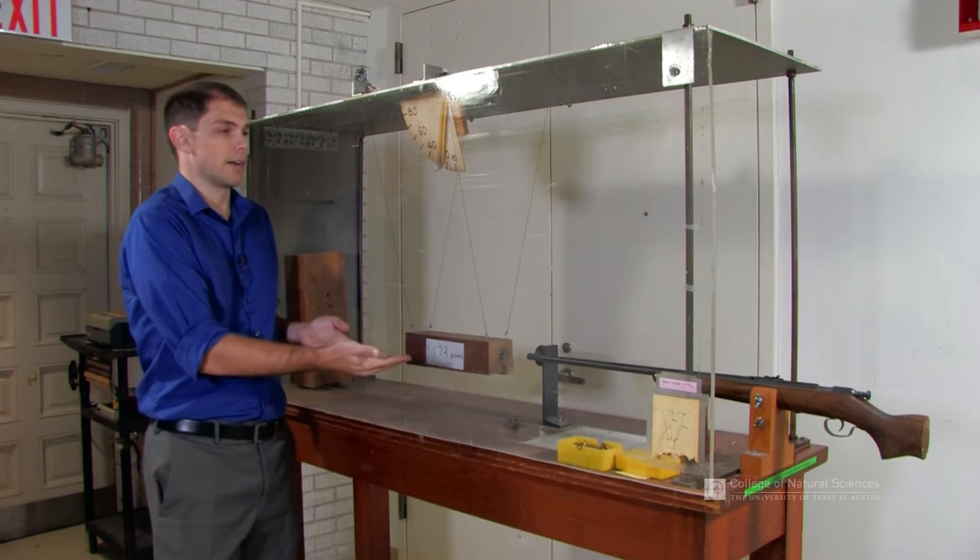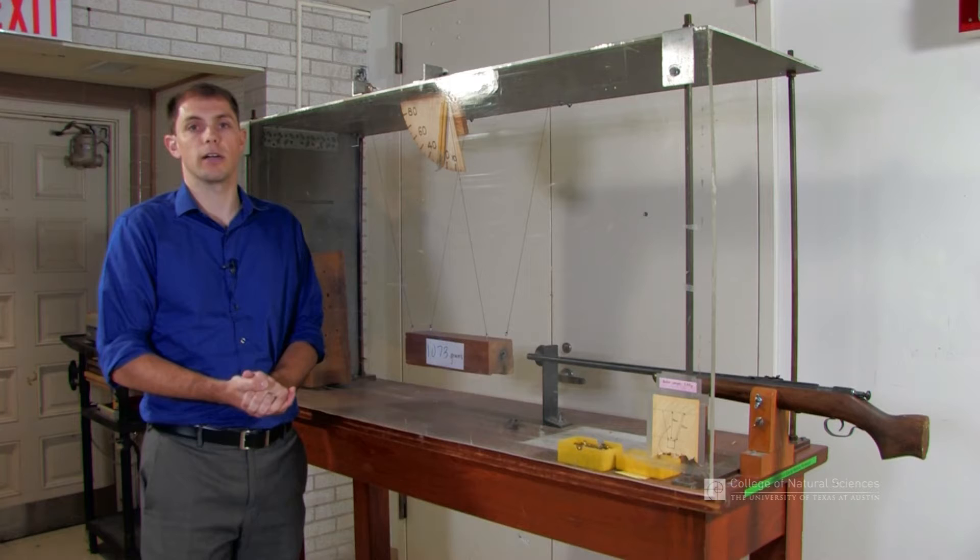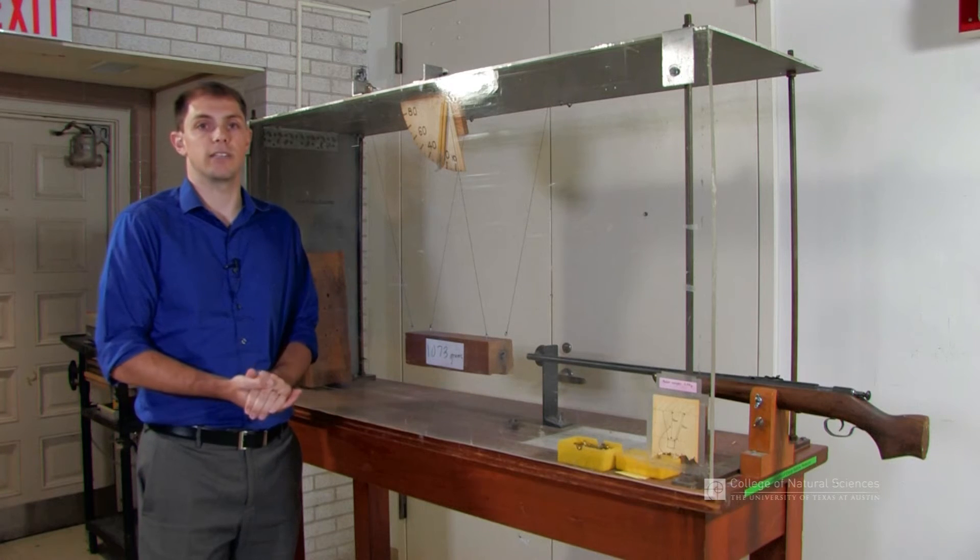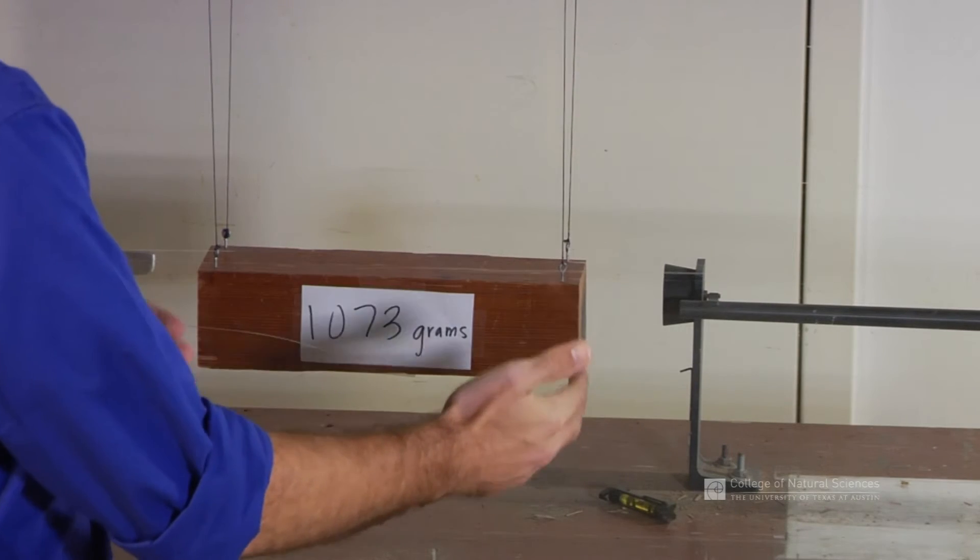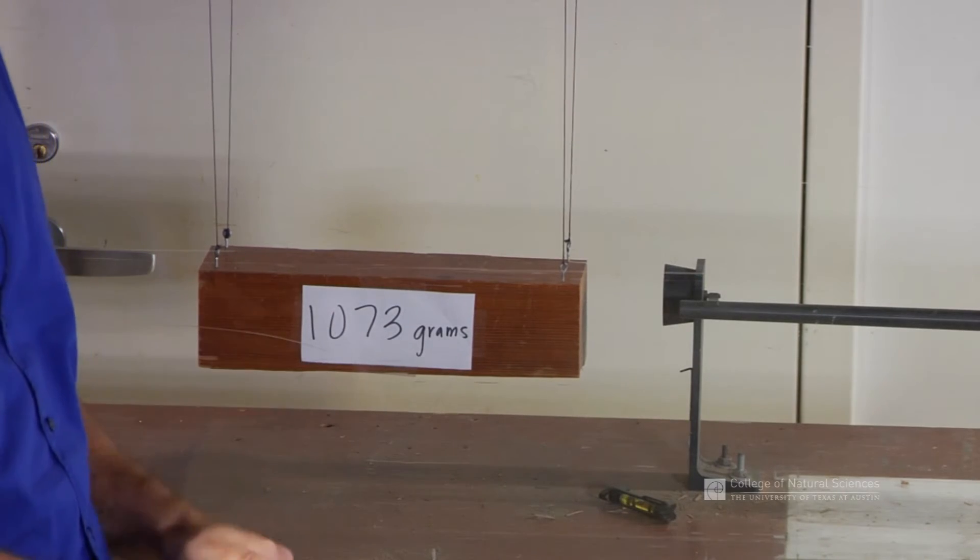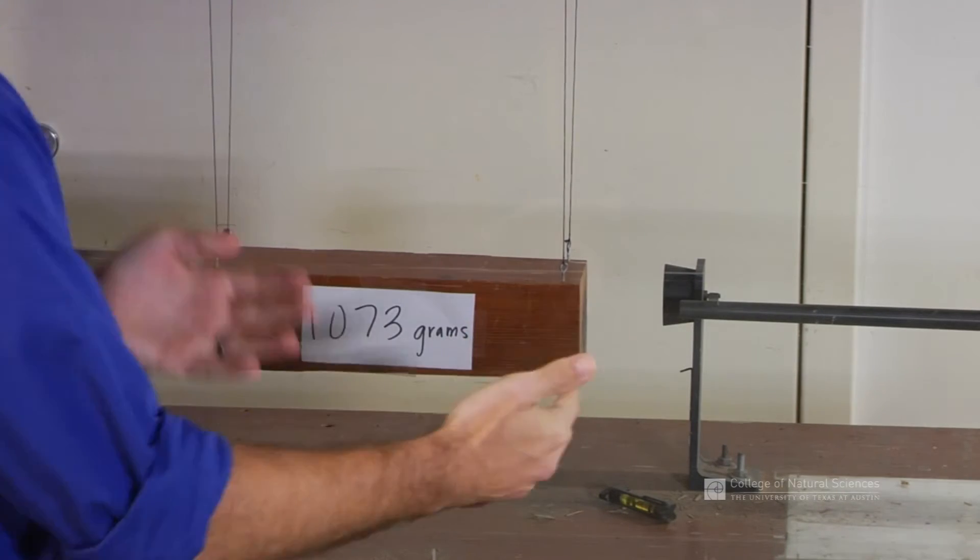It then goes into the block, and since it lodges itself in the block, it's going to be an inelastic collision. So the two are going to stick together. They're going to have some final velocity—some final velocity of the block and bullet together.